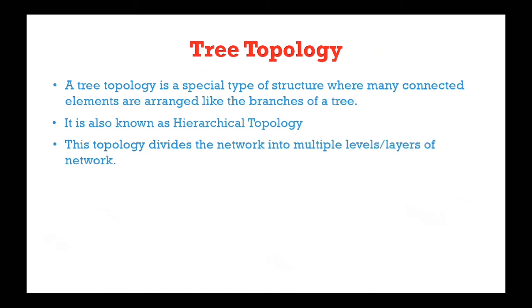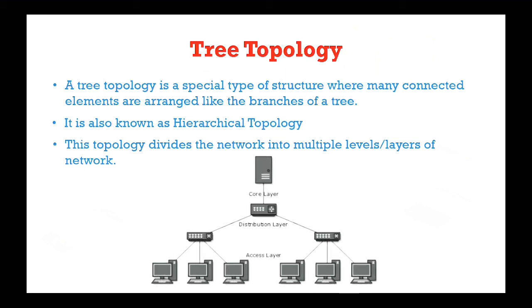The topology divides the network into multiple levels of layers. A network is mainly bifurcated into three types of different devices, as shown in our diagram.